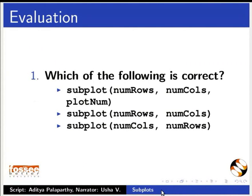Here are some self-assessment questions for you to solve. Which of the following is correct? Subplot bracket number of rows comma number of columns comma plot number.